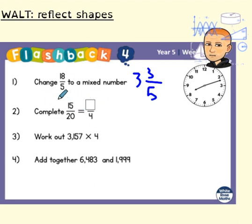Question 2, complete 15 twentieths equals something quarters. I've divided my 20 by 5 to get to 4, so I divide my 15 by 5 to give me the value for my numerator. The answer is 3 quarters.